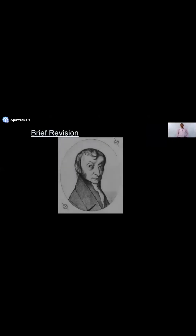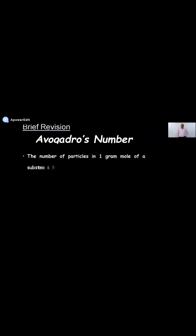We did Avogadro number yesterday. This man constantly watching us — his name is Avogadro, Amedeo Avogadro, an Italian scientist. What is the definition of Avogadro number? The number of particles in one mole of any substance is fixed and it is called Avogadro number. The symbol is N subscript A, and its value is 6.02 × 10²³ particles.